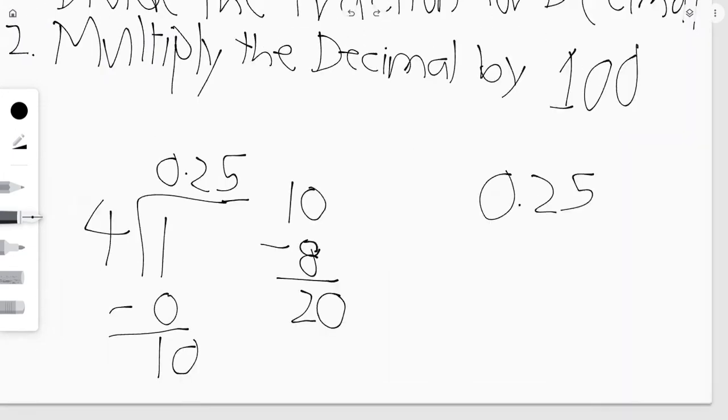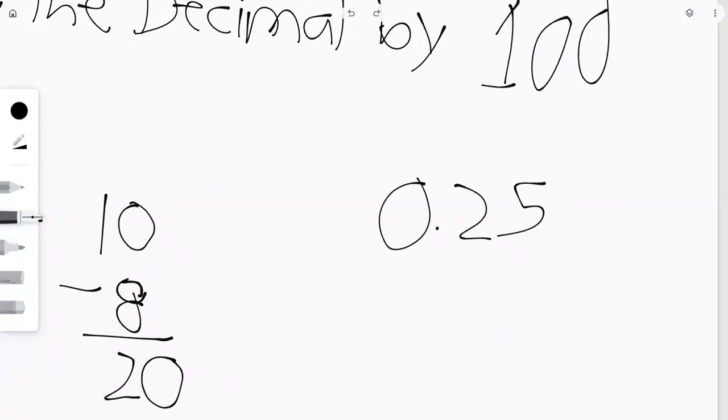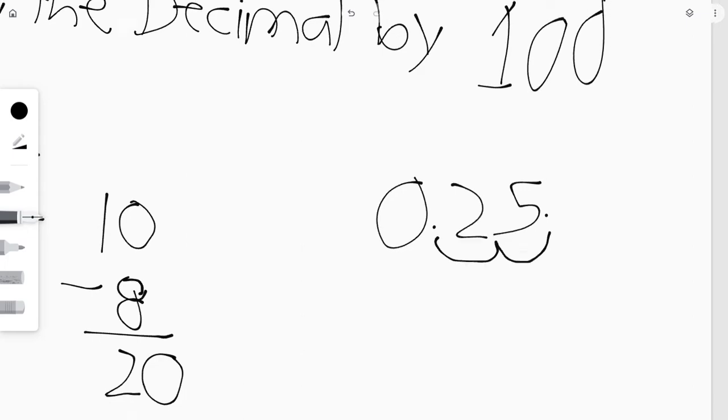All we have to do is switch this decimal with all these zeros. How many zeros do we have here? We have two zeros. So 1 and 2. So 0 to 5, that's basically 25.